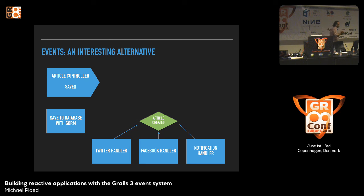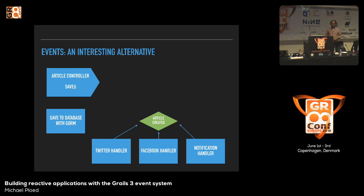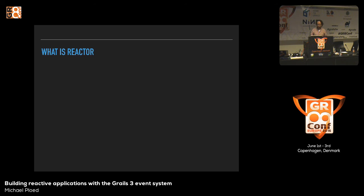How would we usually solve this kind of problem? We could add a messaging infrastructure such as RabbitMQ, ActiveMQ, or even MQ Series — publish an event through the messaging infrastructure and have messaging-based Spring beans listening to these events. But for normal, smaller, medium-sized Grails applications, that might be a little overkill — it adds complexity. So there is now a project called Reactor, which is the basis of the Grails 3 event system.